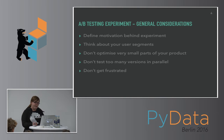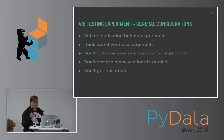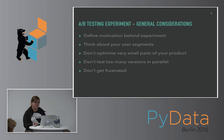Some general considerations about AB experiments: you should really define the motivation behind your experiment, which means you should be impartial when setting up your experiment, and not just test to justify a gut feeling. You should think about your user segments — which members could actually benefit from the changes, and is this worth the engineering effort? Also, don't test too many versions in parallel, because you want to identify the underlying pattern of what works best for your members. And don't get frustrated — most of your experiments probably won't yield a significant difference between variants.